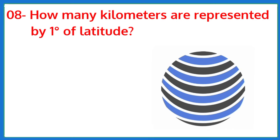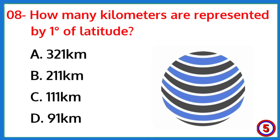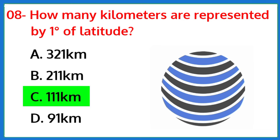How many kilometers are represented by one degree of latitude? The correct answer is option C: 111 kilometers.